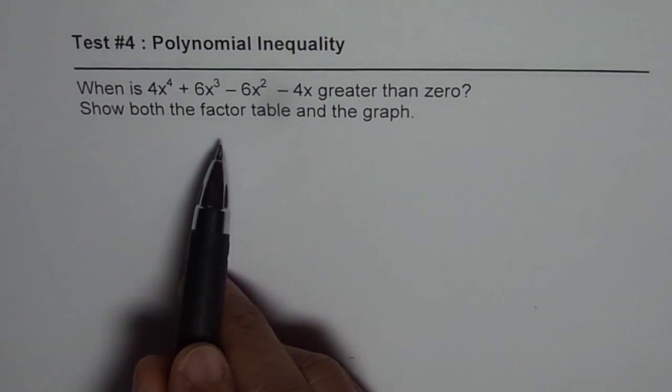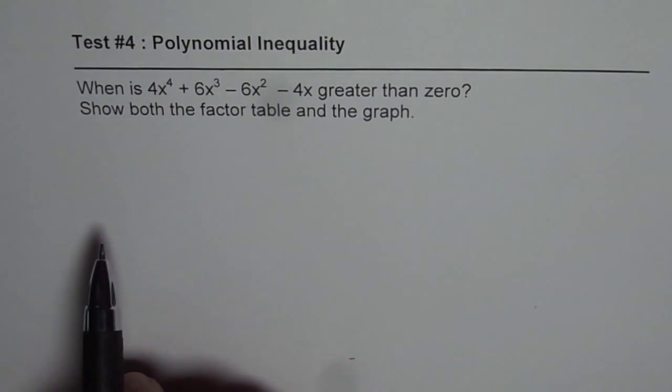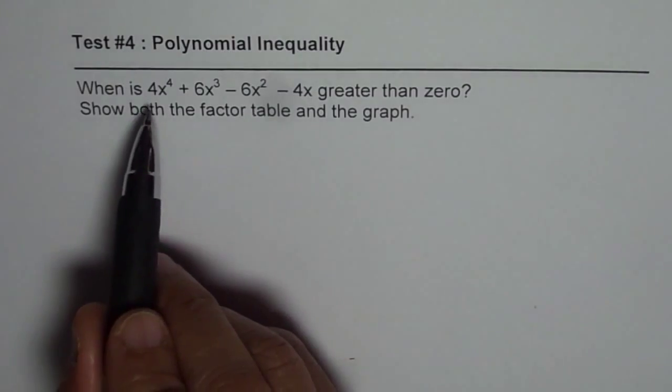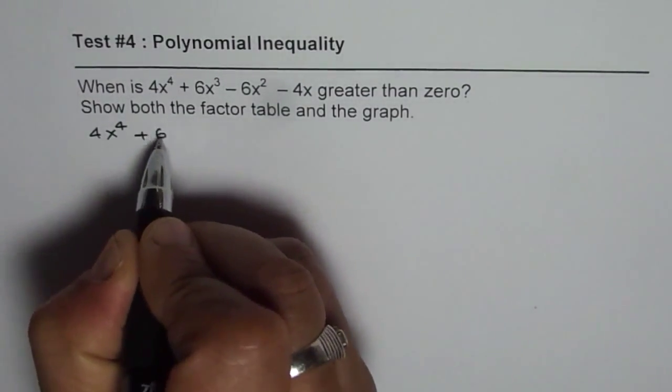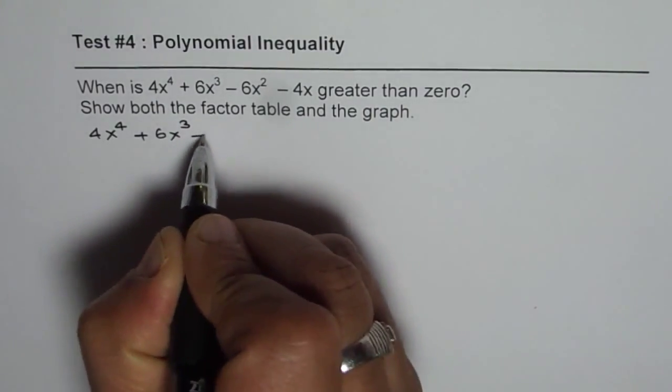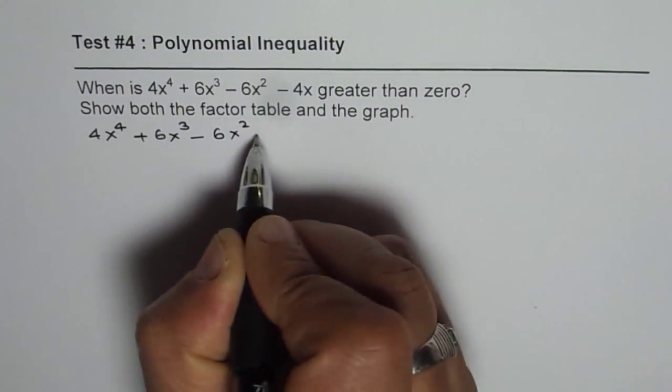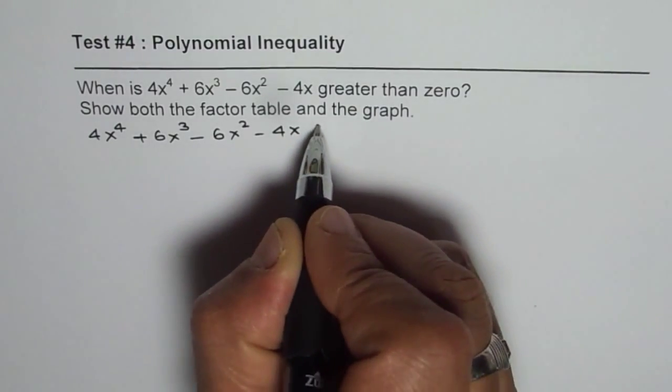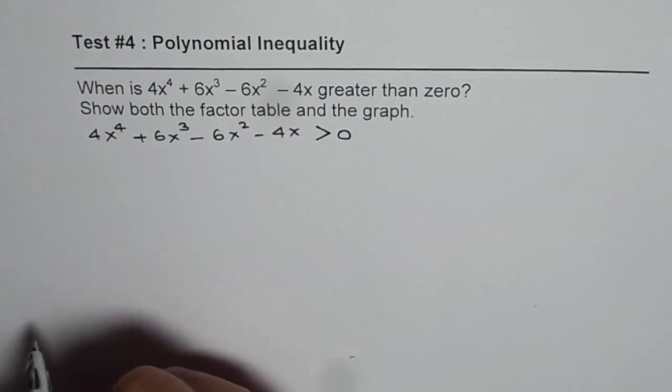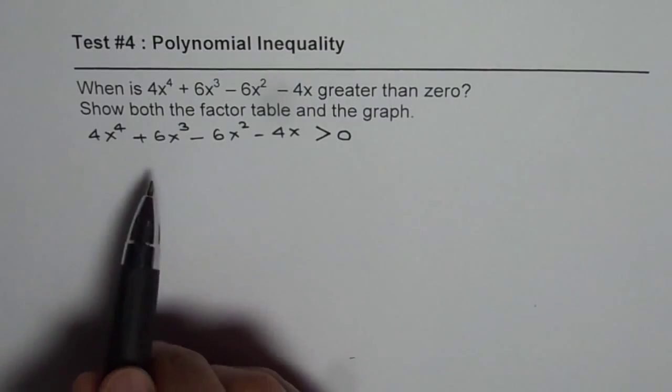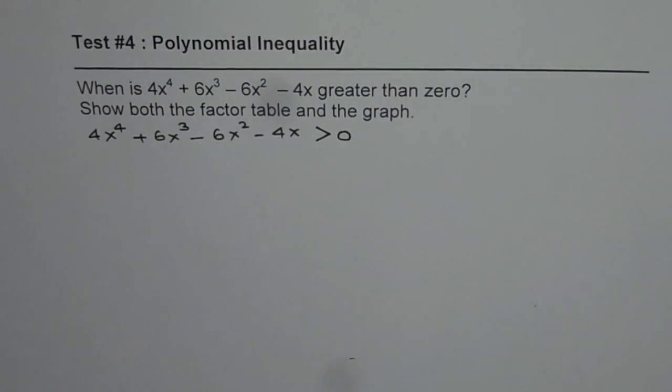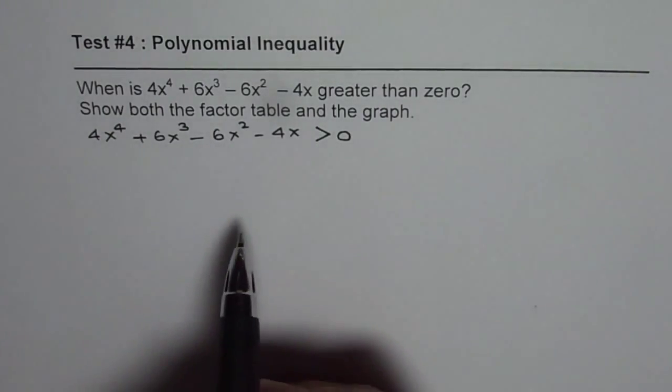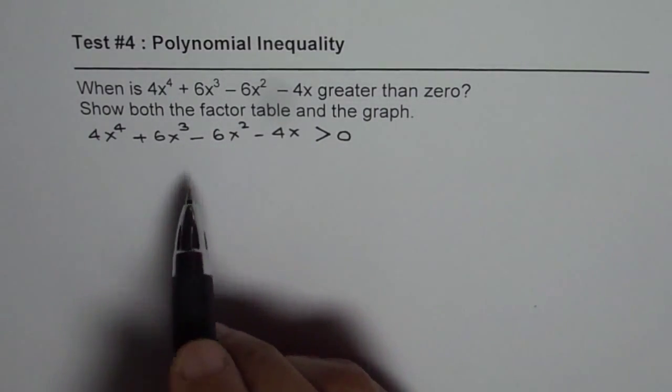So it is a practice question. I would like you to pause the video and answer the question, and then watch my solution. We have the equation 4x to the power of 4 plus 6x cube minus 6x square minus 4x greater than 0. We need to solve for the inequality, that means to find the interval during which the polynomial is greater than 0 or positive.